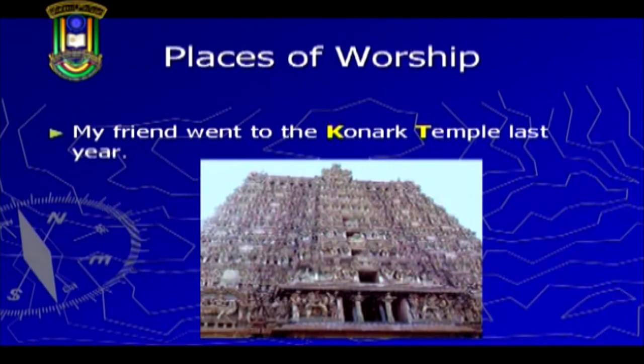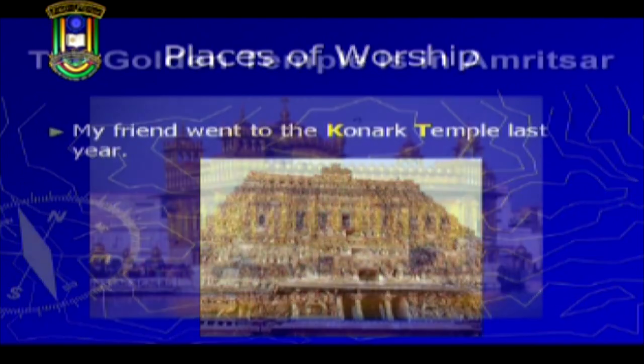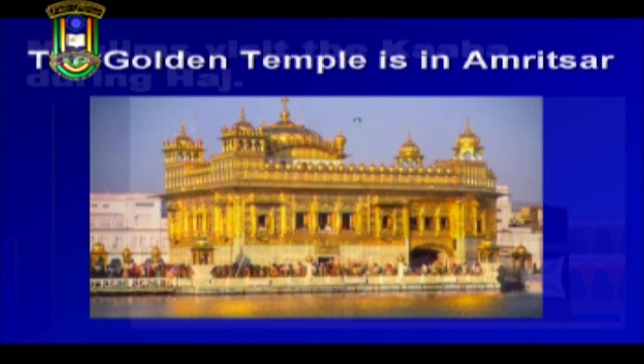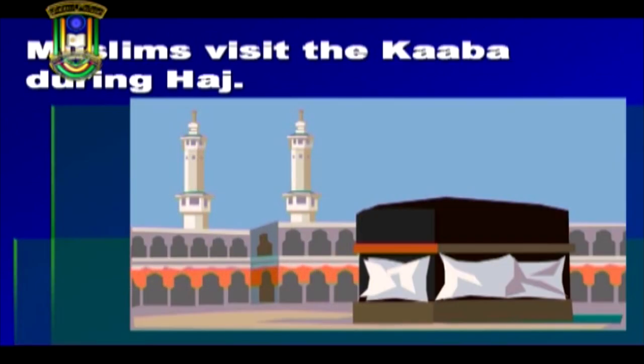So you use a capital letter to indicate names of monuments. Apart from this, capital letters are also used to indicate names of places of worship. My friend went to the Qutab Temple last year. The Golden Temple is in Amritsar. Muslims visit the Kaaba during Hajj. In these examples, the names of places of worship — whether it is the Golden Temple or the Kaaba — have all been capitalized. So, apart from names of monuments, you will also capitalize names of holy places.